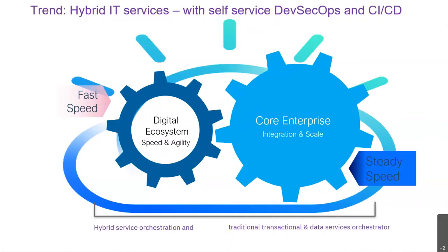Everybody wants to hear about cloud, whatever cloud means — because talking to five people, you get six or seven different meanings. If you're talking about cloud, it becomes foggy, because everybody thinks cloud is something different depending on what they need. Cloud solves all the problems — that's why if you look at Dilbert's cloud comic, the answer to every question on the questionnaire is 'cloud,' because, as the boy says, the answer to all questions today is cloud.